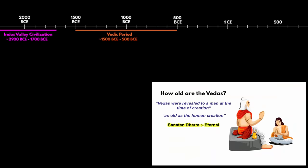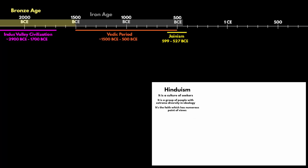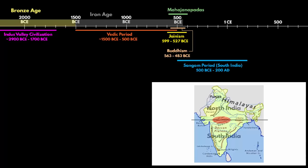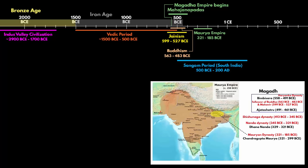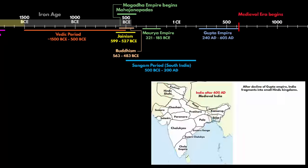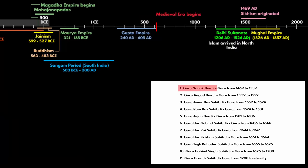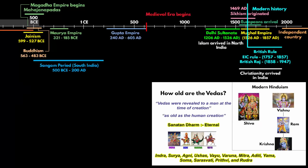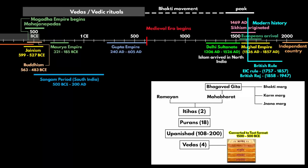In this video, I am going to give you a timeline overview of Indian history, covering the ancient, medieval and modern era. I'll show you all the important events that took place in the history of the Indian subcontinent, which includes ruling, conquest, regional unification, disintegration, spread of different religions, and in the end we will also see how Hinduism evolved and transformed from the Vedic period to modern Hinduism.